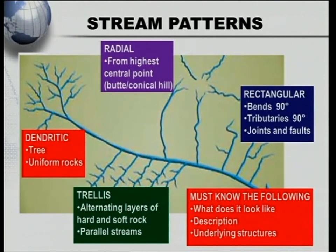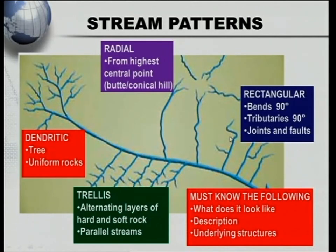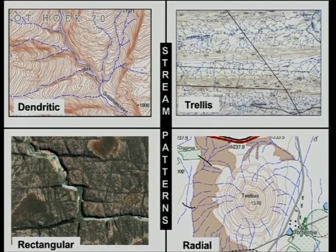The radial pattern flows from the highest point in different directions — it actually looks like a bicycle wheel. The word rectangular means 90 degrees. Remember, with the rectangular pattern there are two things regarding 90 degrees: the bends are 90 degrees, and the tributaries also join at 90 degrees. We find rectangular patterns where we have lots of joints and faults in the underlying structures.